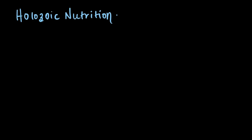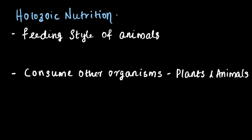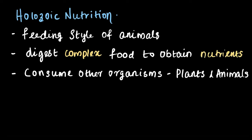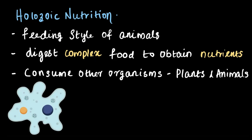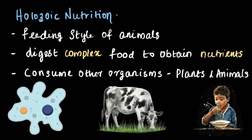And finally, we have holozoic nutrition — the feeding style of animals. Animals consume other organisms, like plants and other animals, and they digest this complex food to obtain nutrients. From microorganisms like amoeba, which feeds on food particles, to cows that graze on grass, and to humans that eat a variety of food — holozoic nutrition is one of the most common ways organisms obtain energy and sustain themselves.